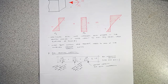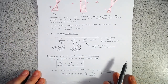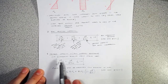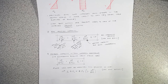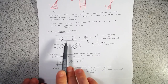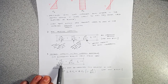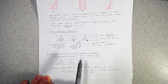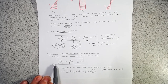Moving from section capacity to member capacity, let's look at the case of bending about the strong axis with full lateral restraint — meaning no lateral torsional buckling. In this case, M_B is simply equal to M_S, the section capacity, because we have full lateral restraint and the effective length equals zero. So we can just use the section capacity for the bending part.